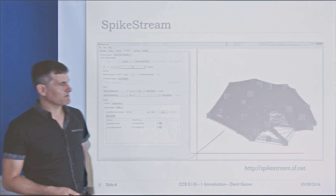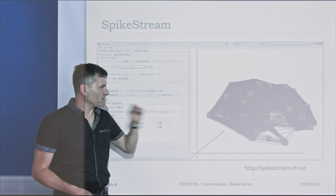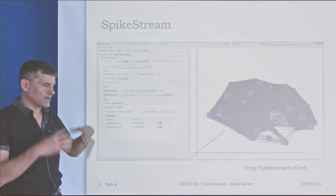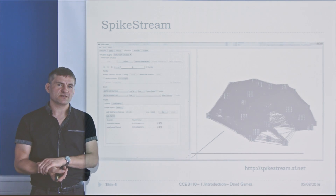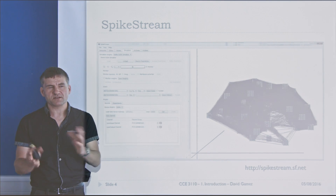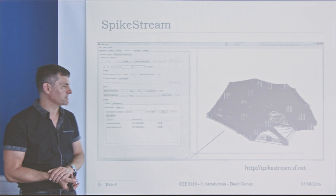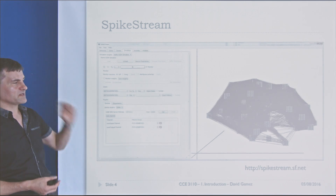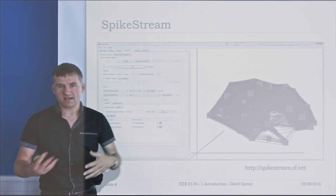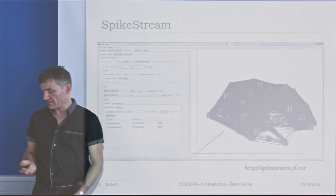This is some software I wrote a while ago called Spike Stream. It allows you to simulate maybe 100,000 neurons close to real time, and it's got various plugins for analyzing neural networks.